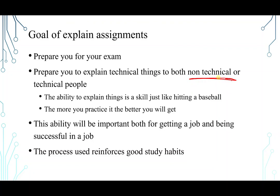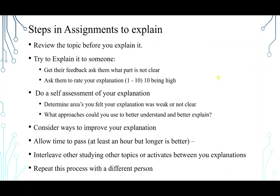The process used reinforces good study habits. So here is the steps in assignments to explain. I'm going to say it only once. So review the topic before you explain it. Try to explain it to someone. Get their feedback and ask them what parts were not clear enough. Ask them to rate your explanation, 1 to 10, like 10 being high. Do a self-assessment of your explanation. Determine what areas you felt you were weak on or not clear enough. What approaches could you use to better understand and better explain the topic? Consider ways to improve your explanation. Allow time to pass, at least like an hour or so, between the first explanation and the other. Interleave these other studying, other topics or activities between the explanations, and repeat this process with a different person.